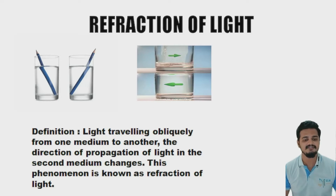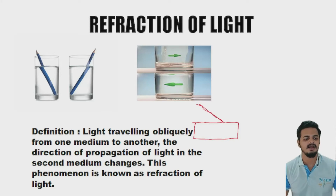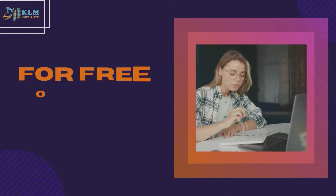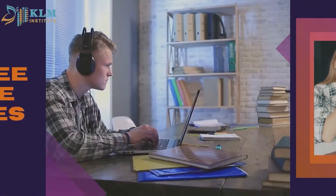Let's read the definition once more: when light travels obliquely — meaning in a slant way — from one medium to another, the direction of propagation of light in the second medium changes. This is called refraction of light.